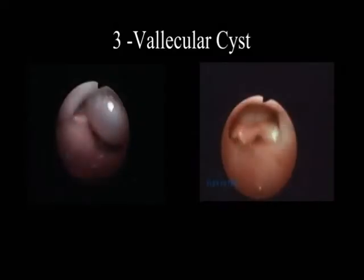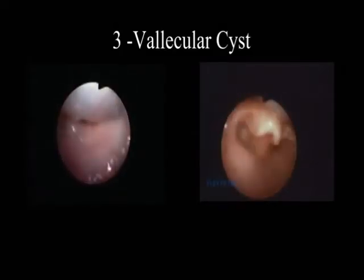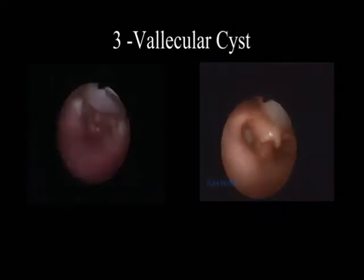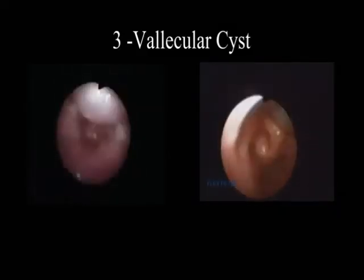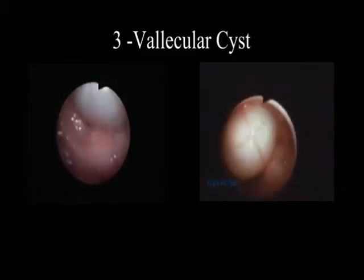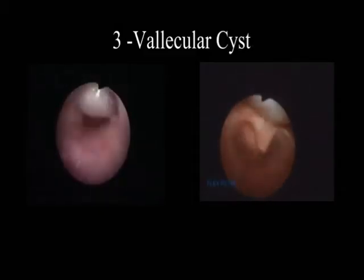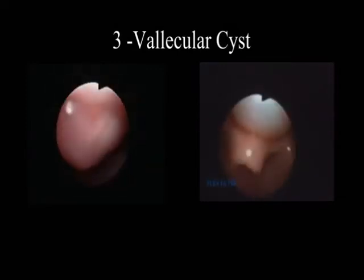Vallecular cyst is a rare cause of stridor. Common symptoms are dyspnea, feeding difficulties, coughing, and failure to thrive. Differential diagnosis includes dermoids, teratomas, lymphangioma, hemangioma, or lingual thyroid. Treatment is endoscopic marsupialization or excision.